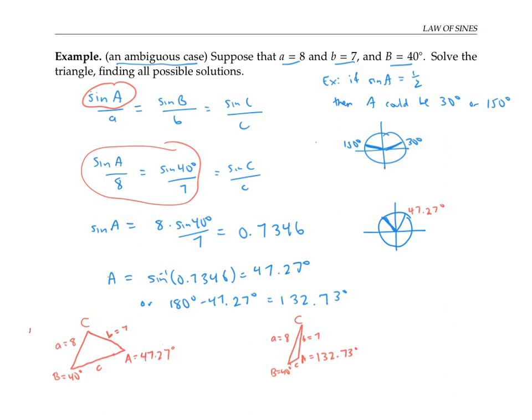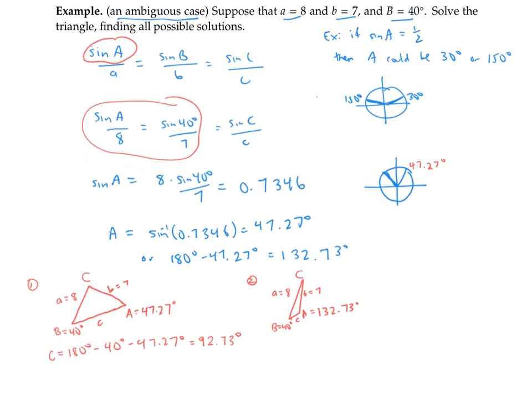In the left side, I'll call this case one. We can solve for angle C by taking 180 degrees minus angle B minus angle A. That gives us an angle just over 90 degrees, 92.73 degrees. Now we can use the law of sines to find the final side length c. So I'll plug in the value of angle C into this part of my equation and solve for c to get c equals sine 92.73 degrees times seven over sine 40 degrees, which works out to 10.88.